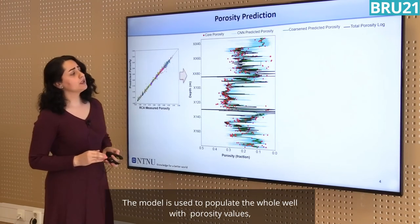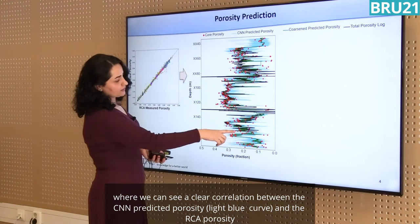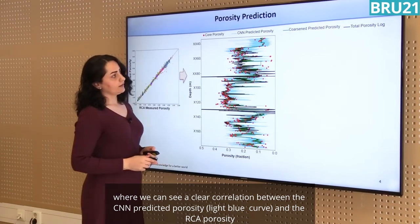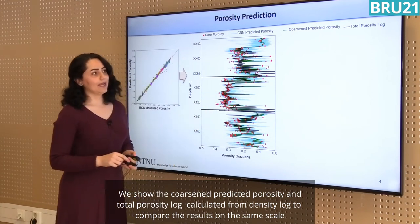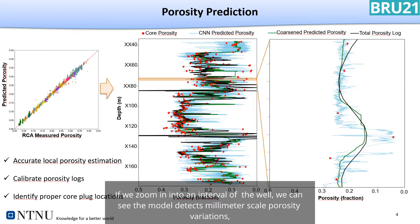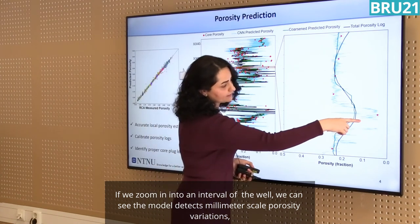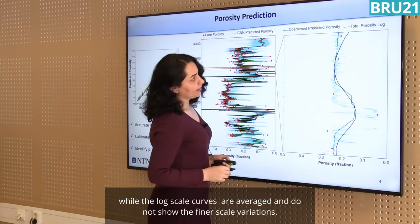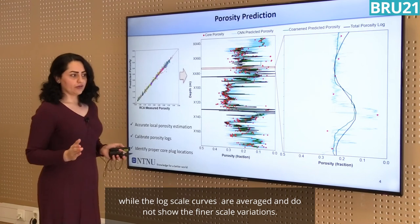The trained model is then used to populate the whole well with porosity measurements. In this plot, the predicted porosity is shown in light blue, and RCA measured porosity is shown with red circles. We also show coarsened predicted porosity and total porosity log for comparison. Zooming into a small interval, the CNN model is able to detect millimeter-scale resolution variations of porosity, while log-scale measurements are averaged and cannot detect such fine variations.